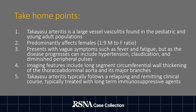A few take-home points from this case: Takayasu Arteritis is a large vessel vasculitis primarily found in the pediatric and young adult populations, predominantly affecting females at a 1 to 9 ratio. Patients may present with vague symptoms such as fever and fatigue, but as the disease progresses, symptoms can include hypertension, claudication, and even diminished peripheral pulses. Imaging features that would suggest Takayasu Arteritis include long segment circumferential wall thickening of the thoracoabdominal aorta and its major branches, with or without long segment stenosis or wall enhancement. Takayasu Arteritis typically follows a relapsing and remitting clinical course and is normally treated with immunosuppressive agents.